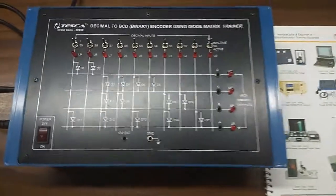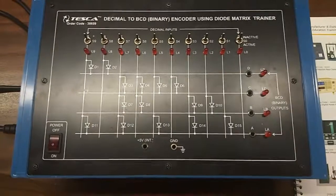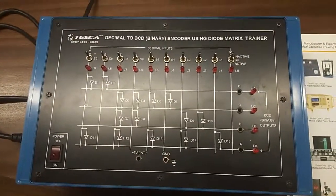Today, we are going to show you our decimal to BCD encoder using diode matrix trainer kit, order code 38659.